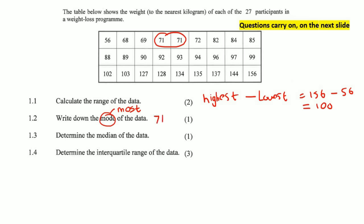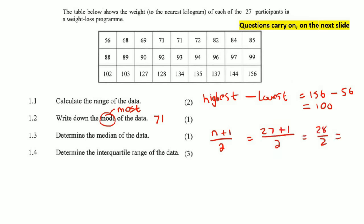Determine the median. The formula for the median position is (n+1)/2. There are 27 people, so that's (27+1)/2 = 28/2 = 14. That's not the answer — that's the position. So we go to position 14 in the data set, which gives us 93.